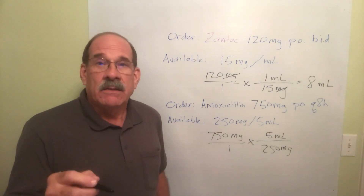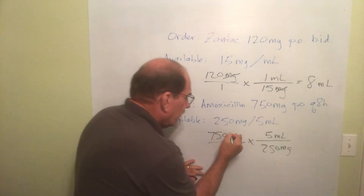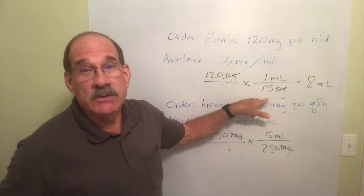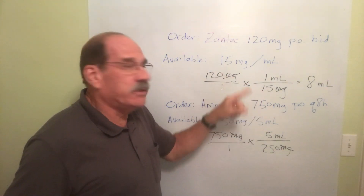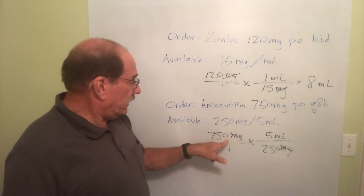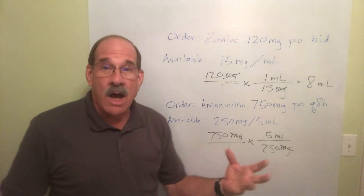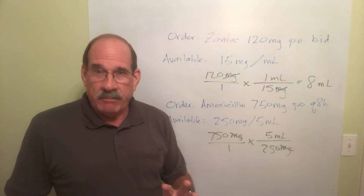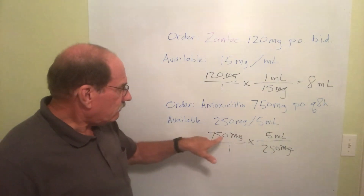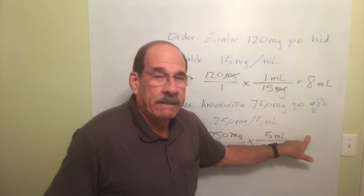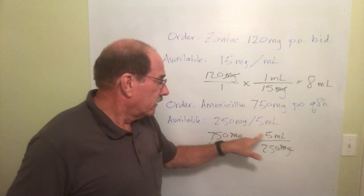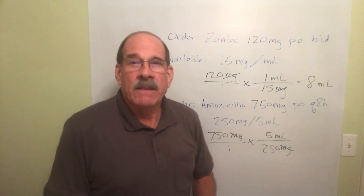Cancel out the symbols that are the same — milligrams is here and milligrams is there; cancel those out. Notice something a little different: the previous example had a one on the bottom, so only two non-one numbers. Here there's a non-one number here, here, and here — three non-one numbers. Technically we're multiplying two fractions: multiply the top numbers together and the bottom number, then divide top by bottom.